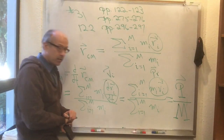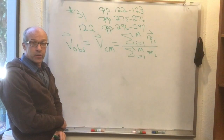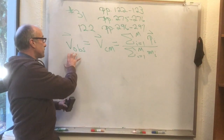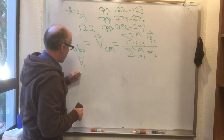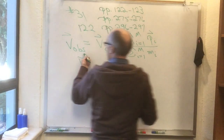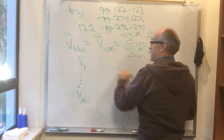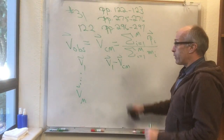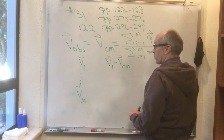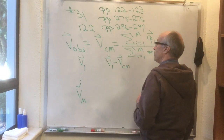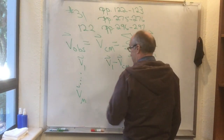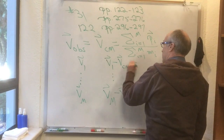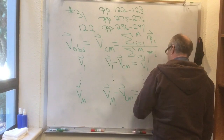Now I want to show what's so special about this particular observer's frame. This observer's frame moves with speed v_cm. If originally the particles are moving with speeds v1 through v_M, and I move to the new frame moving at v_cm, then in this frame particle one moves at v1 minus v_cm, particle two at v2 minus v_cm, particle three at v3 minus v_cm, and the M-th particle at v_M minus v_cm. We call these v1 prime through v_M prime.